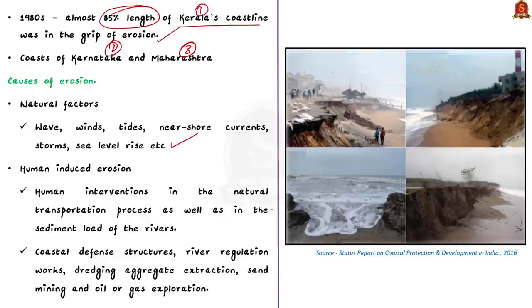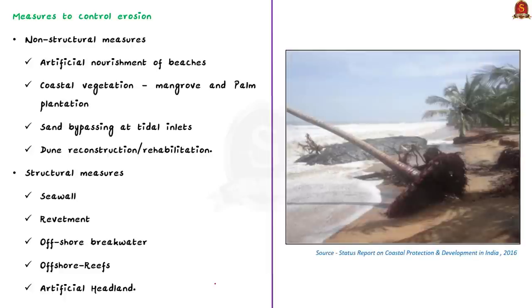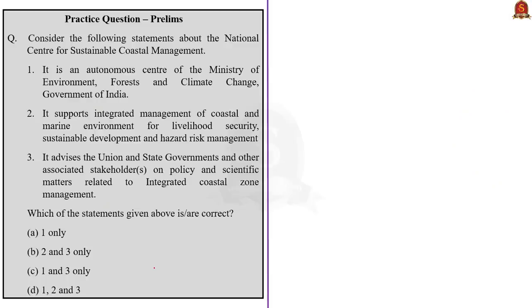Most of the human-induced erosion is due to human intervention in the natural transportation process as well as in the sediment load of the rivers. Some of the manmade factors that lead to coastal erosion are coastal defense structures, river regulation works, dredging aggregate extraction, sand mining and oil or gas exploration. So far, we saw about coastal erosion and causes of coastal erosion. Now, let us see about the mitigation measures. The measures to control coastal erosion include both non-structural and structural measures. Sometimes, it is a combination of both. Some of the non-structural measures are artificial nourishment of beaches, coastal vegetation such as mangrove and palm plantation, sand bypassing at tidal inlets and dune reconstruction or rehabilitation. When we are talking about structural measures, it includes sea wall, revetment, offshore breakwater, offshore reefs and artificial headland. These are some important details regarding coastal erosion. With this information in mind, let us now move on to the next article.